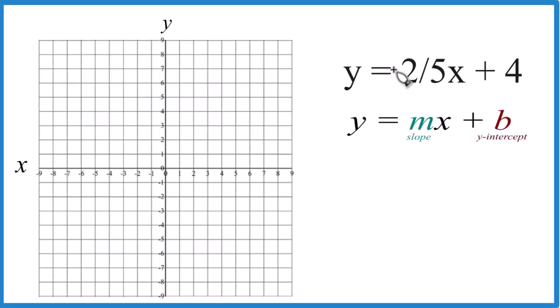So if you need to graph the linear equation here, we have y equals two-fifths x plus four. I'll show you how to do that. And we're going to use slope-intercept form, probably a little bit easier here because we have this fraction. You could use a table of values and you'll get the same graph.